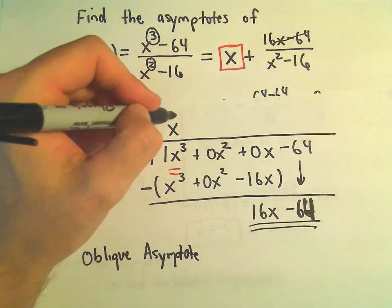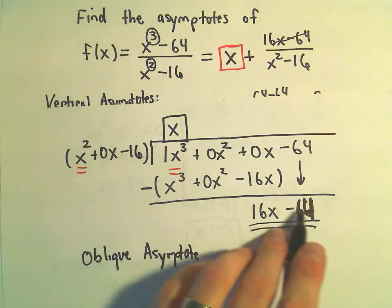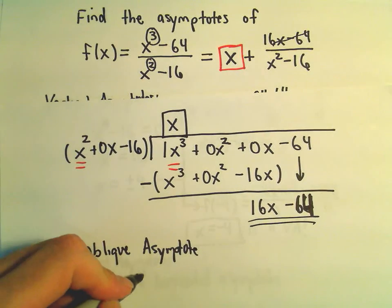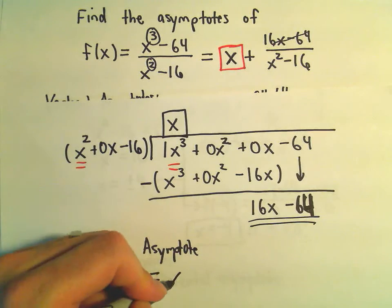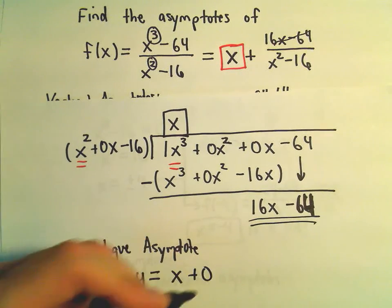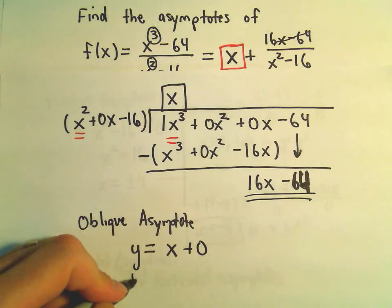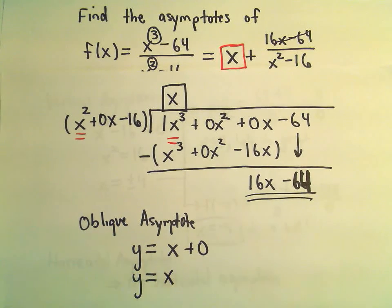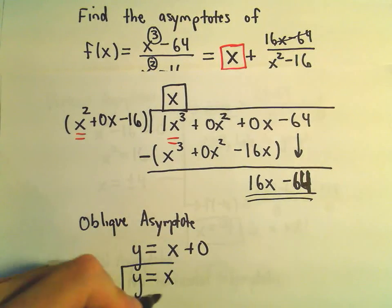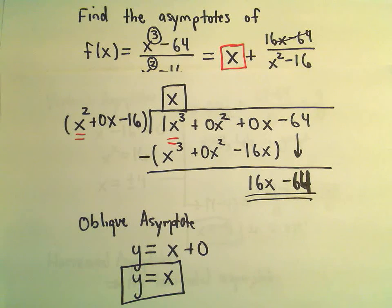Or equivalently, you can just look at the top of your long division before you stop. Our oblique asymptote will be the line y equals x plus 0. So the y-intercept is simply 0. But we usually never write it that way. So we would just say the oblique asymptote here is the line y equals x.